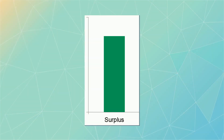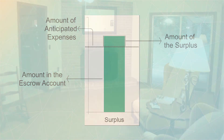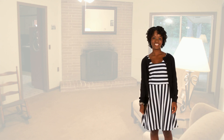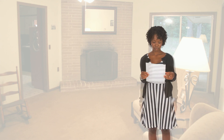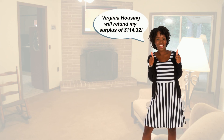On the other hand, a surplus means the amount of money in the escrow account is more than what is required to pay the anticipated expenses. In this example, Tanya owns a home in Danville. When she receives her escrow disclosure this year, it indicates her escrow account has a surplus of $114.32. The surplus amount will be refunded to her.